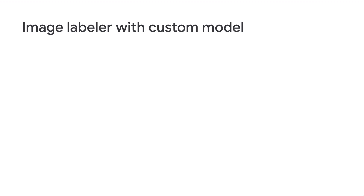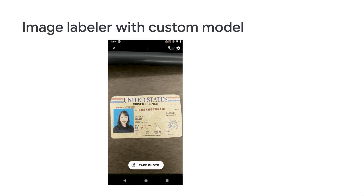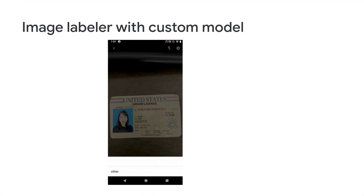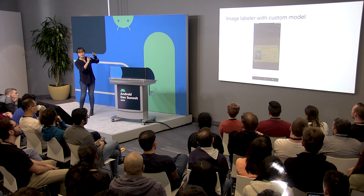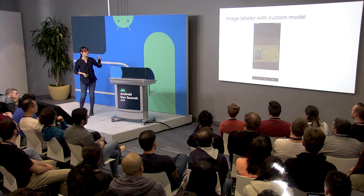Now we have our lightweight custom model, and we'll build our own Image Labeler with it. We take a photo of the driver's license and pass it into this Image Labeler to see if it will recognize the document. The result is 'others' — the driver's license is not correctly recognized. What's wrong? The image is clear and carefully taken, but the Image Labeler still can't recognize it.